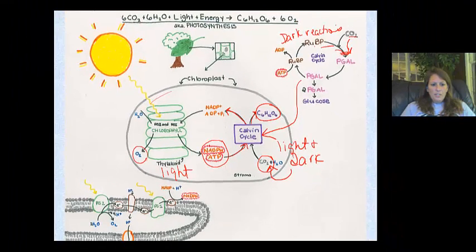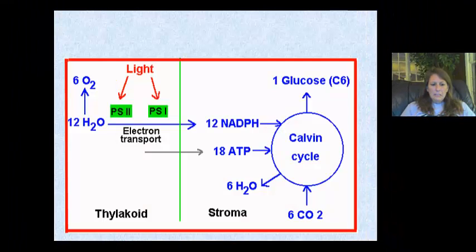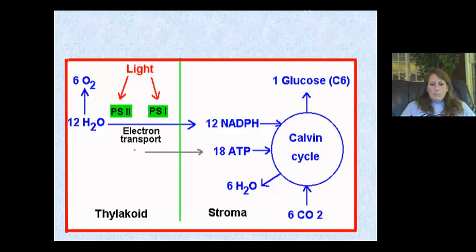Here's another diagram showing everything together. Here's the thylakoid and here's the stroma — the whole structure is the chloroplast. It shows arrows indicating what's going in and what's going out. This was already covered in the last lecture.